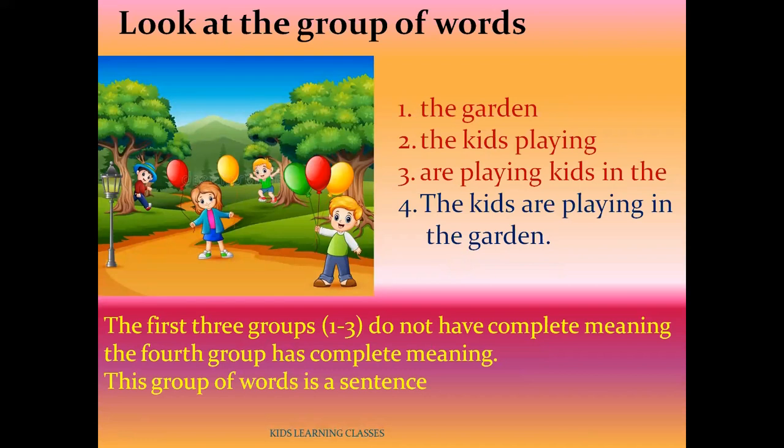Look at this picture of a garden. The first sentence from the observation of this picture is 'the garden.' Second: 'the kids playing.' Third: 'are playing kid in the.' Fourth: 'The kids are playing in the garden.' The first three sentences have no complete meaning and are not written in proper order.